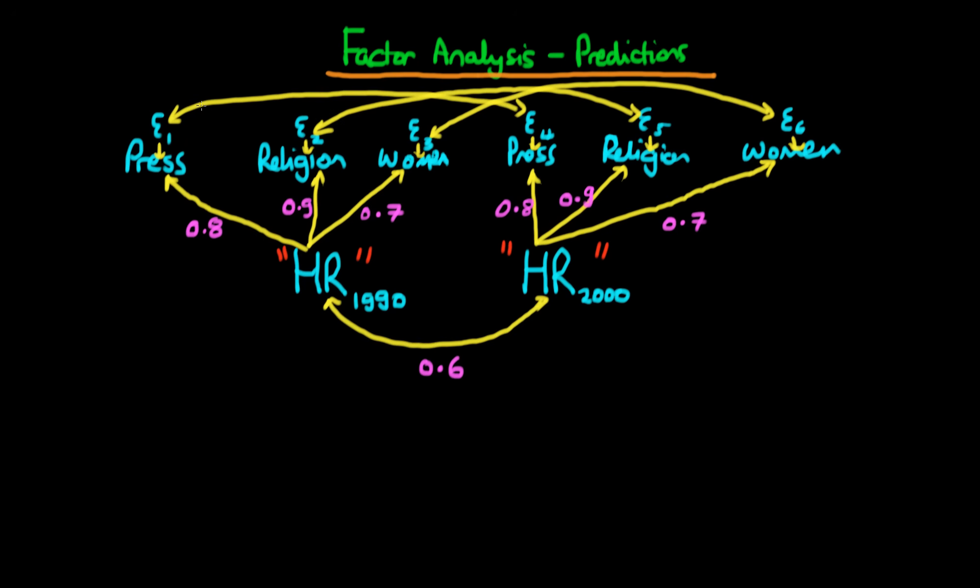Furthermore, we also suggest that there are shared covariances in the error structure, which is not due to these common factors. So we suppose that there is a common covariance in the errors of press, as it's measured in 1990 and in the year 2000. So that might be because of the fact that perhaps the same sort of survey was undertaken, or perhaps the same sort of measures or methods of data collection were used. And we suppose that there is also a covariance of religion, as it's measured in 1990, with religion as it's measured in 2000, as well as with women's rights, as they're measured in the two different times.